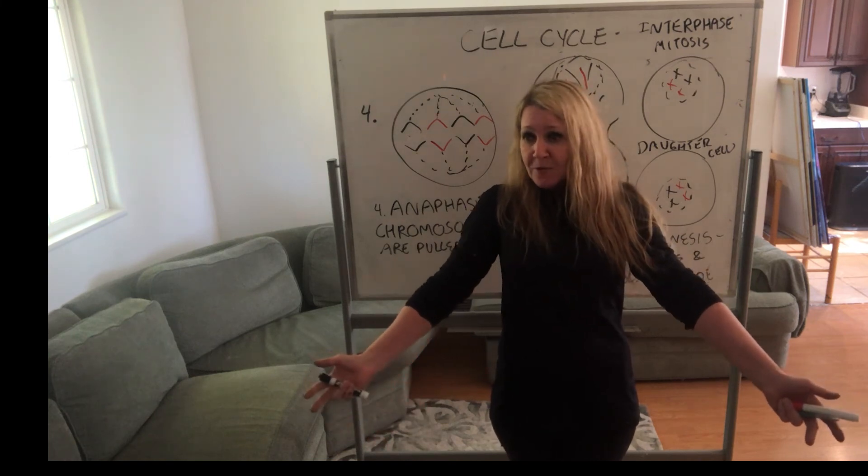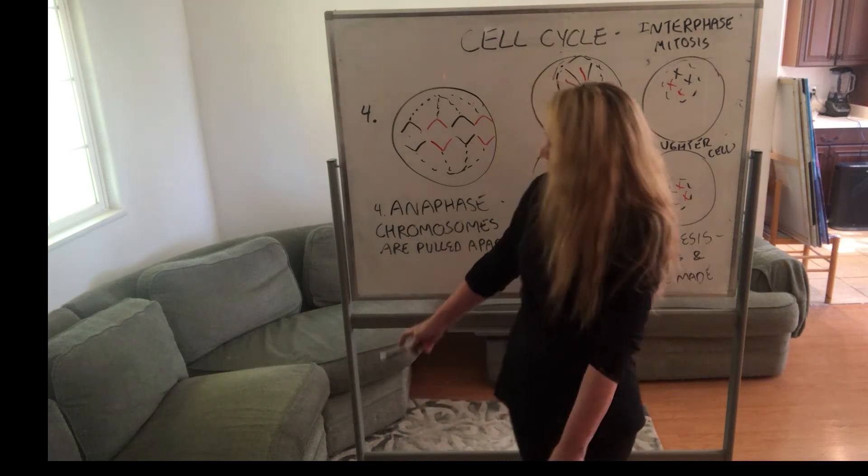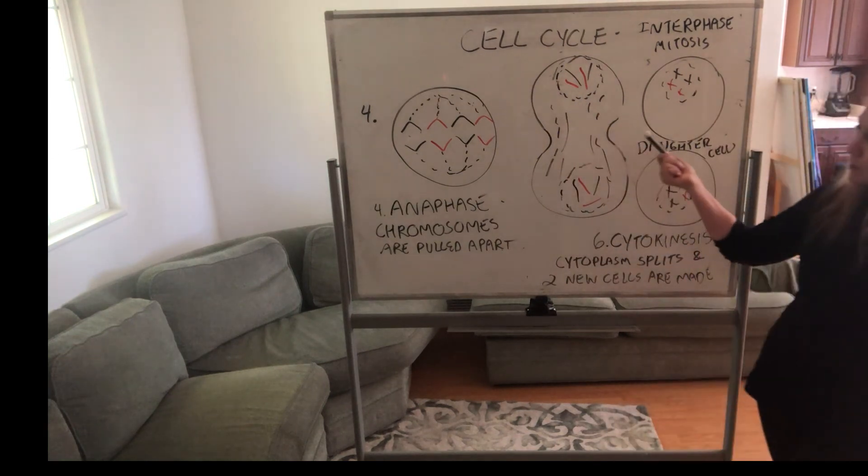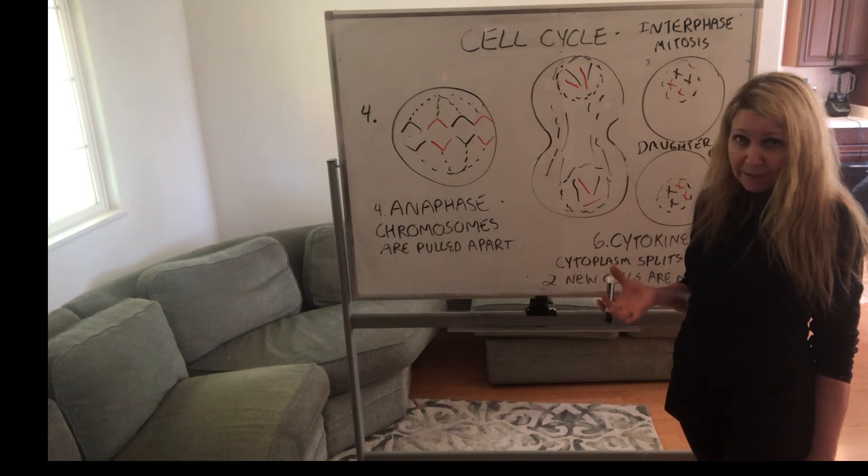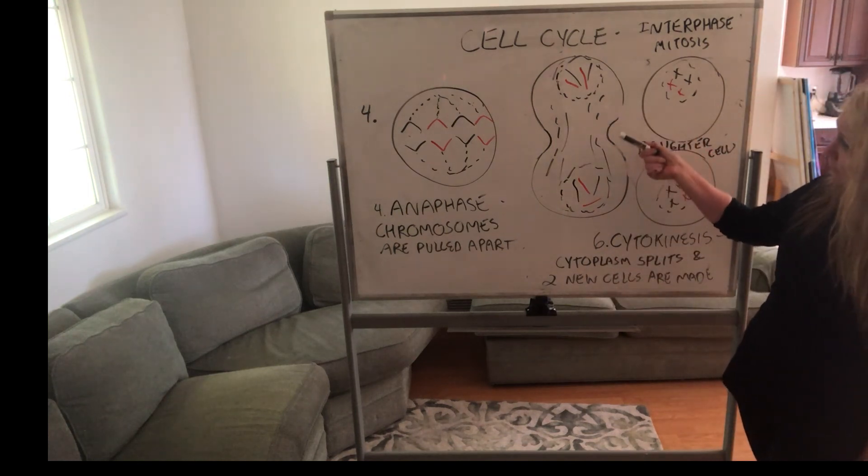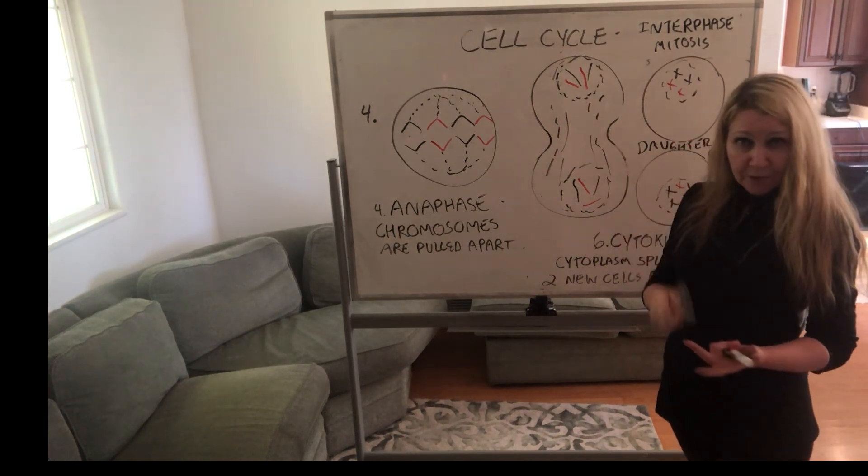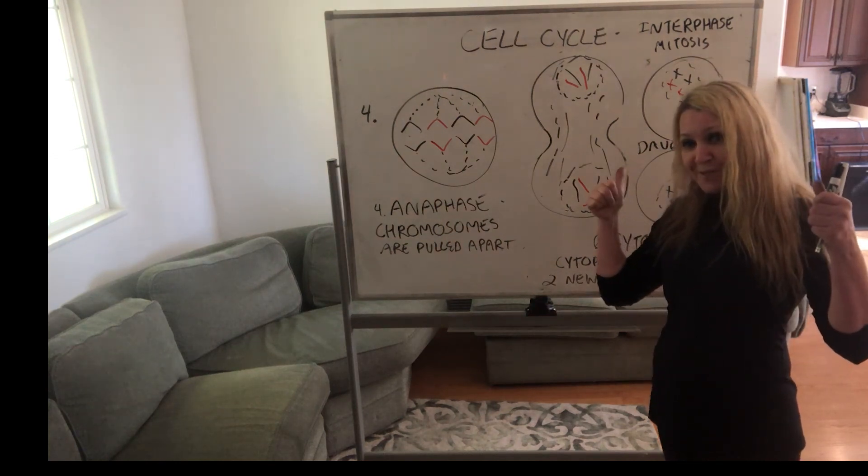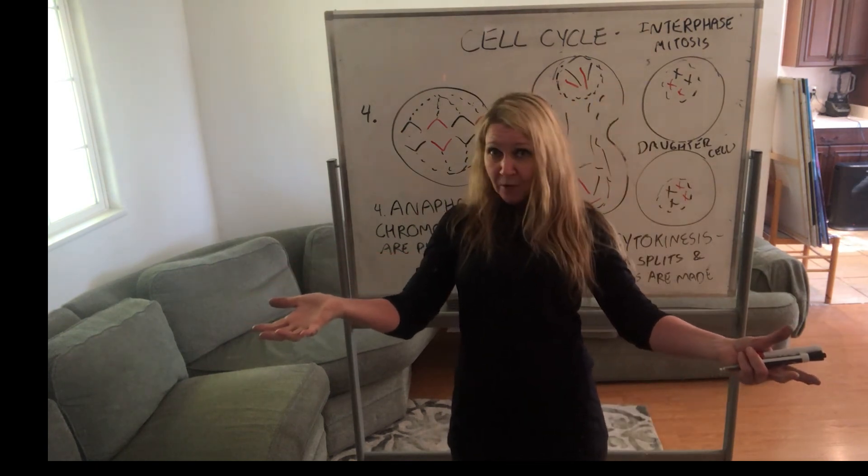So please try this. Do your own demonstration with licorice, if you can, with red and black licorice, and then show these steps—the phases of the cell cycle, which include interphase and mitosis. So cell division—we wouldn't be here without cell division, right? We'd still be zygotes.